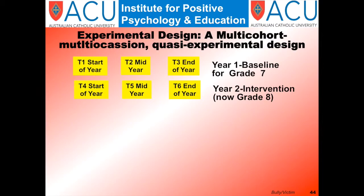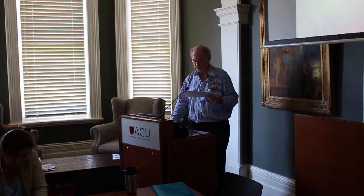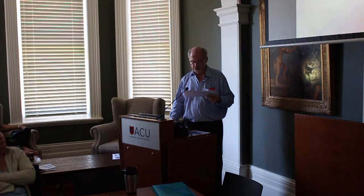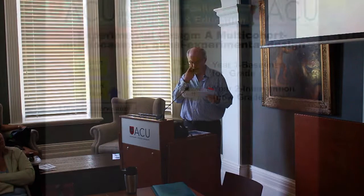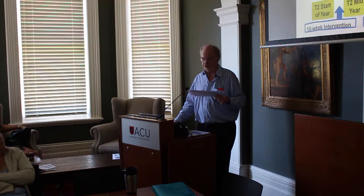Questionnaire packages were administered to all students on six occasions over two years. The three data collections in year one — times one, two, and three — were prior to the intervention and established a baseline control. During the intervention year, year two, there were three parallel data collections — times four, five, and six. The ten-week intervention was administered between time four and five. Time five was the immediate post-intervention and time six was a three-month follow-up. The same design was replicated for each year group.